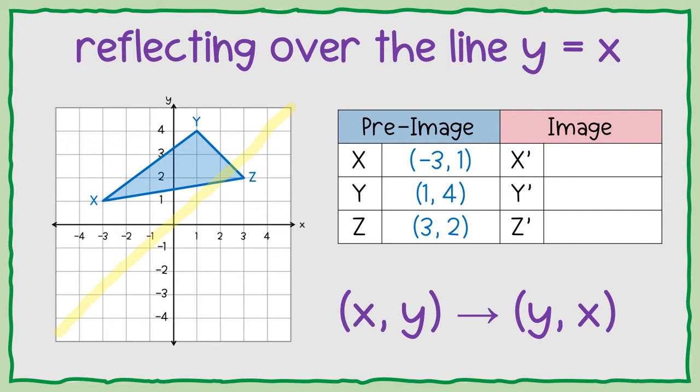So we're going to reflect over this line by switching our numbers. So see how the x now becomes the second number and the y becomes the first number? So with this point x, we're going to switch. Instead of it being negative 3, 1, we're going to have 1, negative 3.